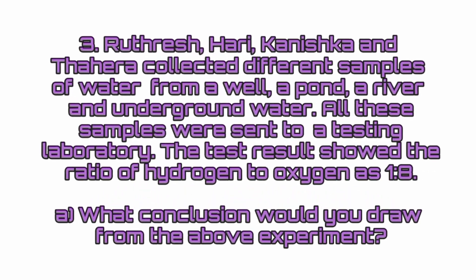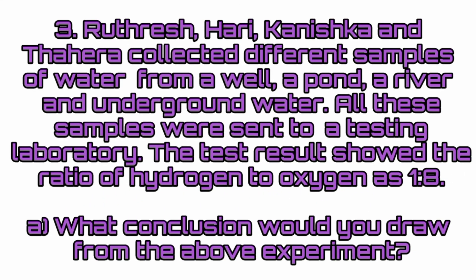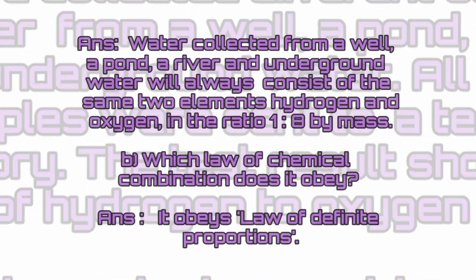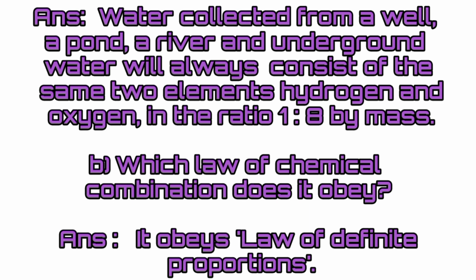Third question: Rudra, Hari, Kanesko and Tahira collect different samples of water from a well, pond, river and underground water. All these samples were sent to a testing laboratory. The test results showed the ratio of hydrogen to oxygen as 1 is to 8. What conclusion would you draw? Answer: Water collected from a well, pond, river and underground will always consist of the same two elements — hydrogen and oxygen — in the ratio 1 is to 8 by mass. It obeys the law of definite proportions. Thank you, friends.